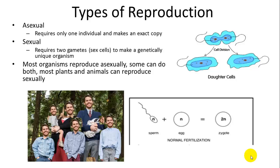Most organisms reproduce asexually. Some can do both. Most plants and animals can reproduce sexually — it doesn't mean that's their main mode. Generally it is, but some plants are mostly asexual. We'll talk about the differences between the two.